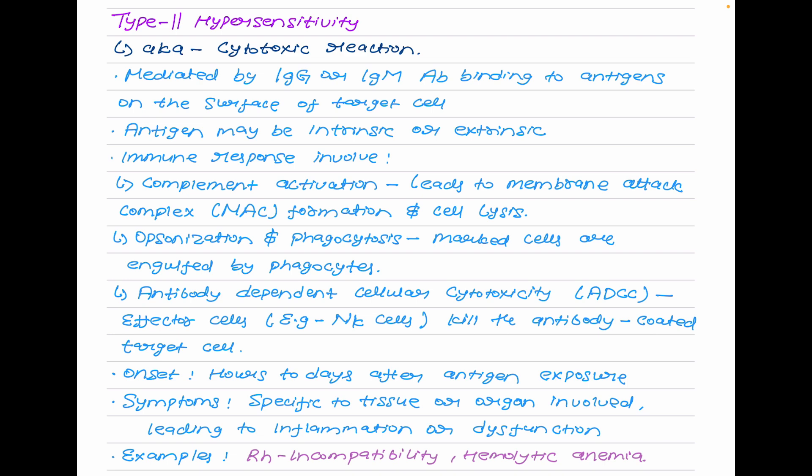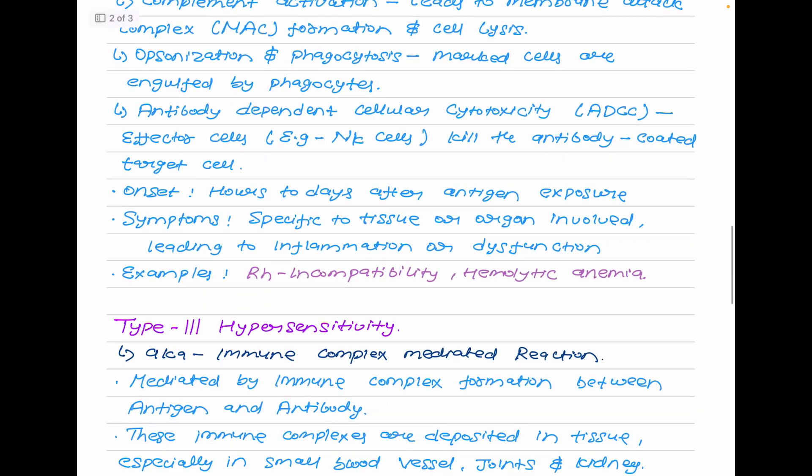Onset for type 2 hypersensitivity takes place within hours to days after antigen exposure. Symptoms are quite specific to the tissue or organ involved, leading to inflammation or dysfunction. Examples include Rh incompatibility and hemolytic anemia.